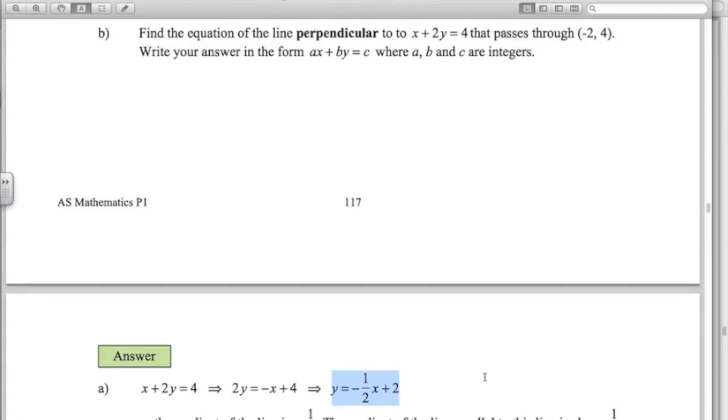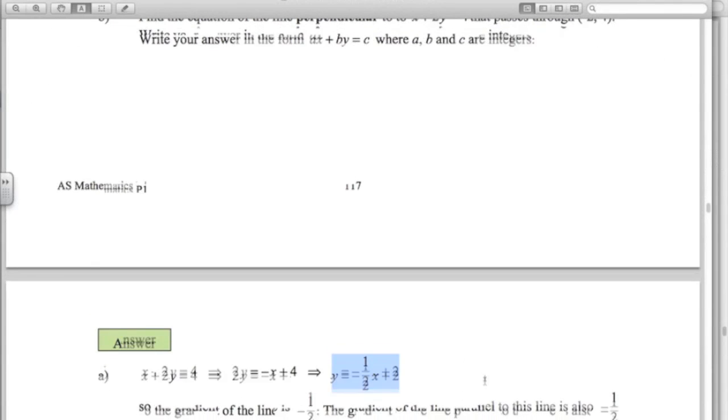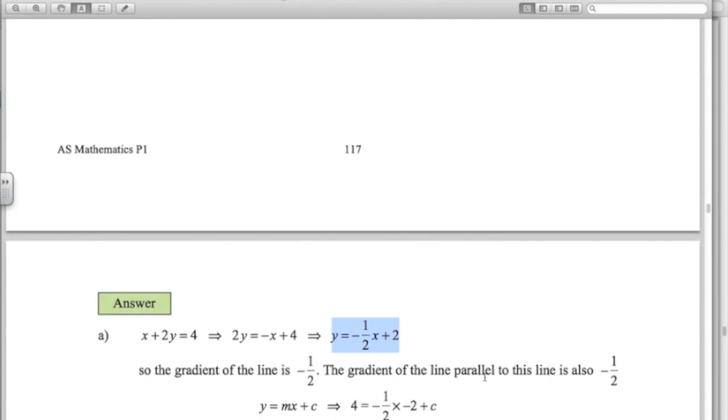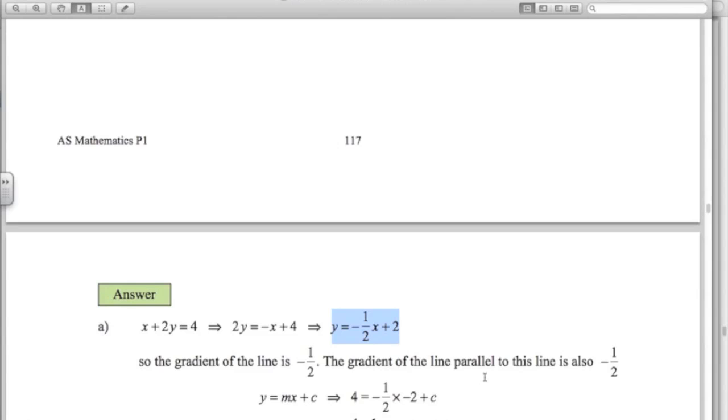So the line we're looking for for part a is parallel to that one, so it also has a gradient of negative 1.5. So the equation of the line will be y equals negative 1.5x plus c. So I replace x with negative 2 and y with 4. That's the question. What's the equation of the line parallel to this one here going through the point negative 2, 4?